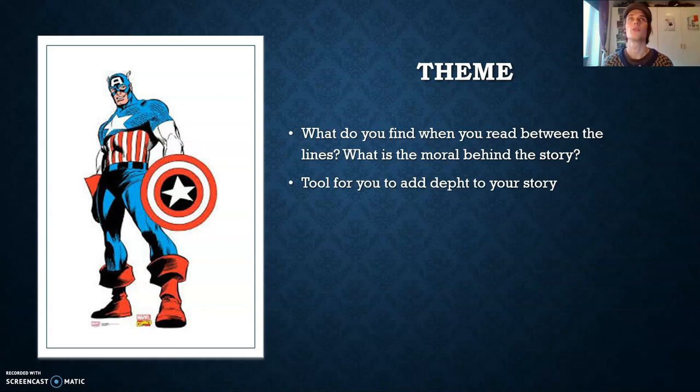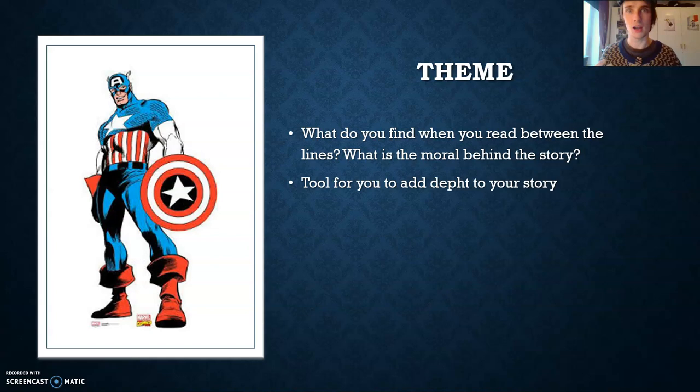We don't see that as much in modern versions, but that's where it comes from. You can also think of theme more generally — like a story that was really all about friendship. You can write a story about murder, but in the end maybe your protagonist and antagonist became friends, and you've tied it up with a moral conclusion or theme about friendship and overcoming difficulties. Don't be afraid to use that, even if it can become a little bit cheesy.